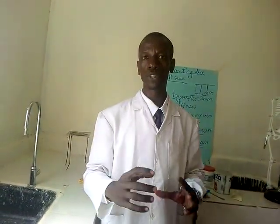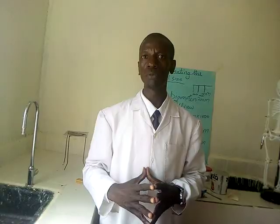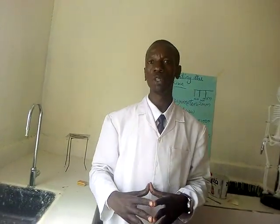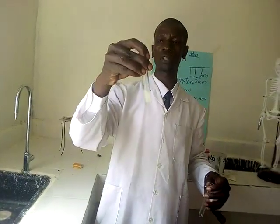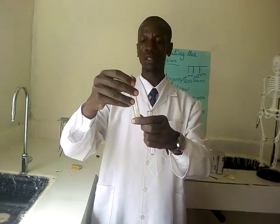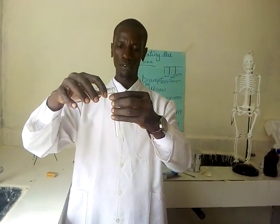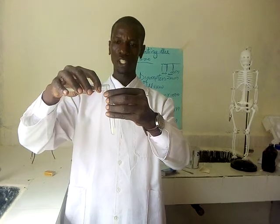Procedure number one: put two centimeter cubed of the substance to be tested in a test tube. This is my test tube. This is the substance that I'm supposed to test. I'm just going to pour it directly here.